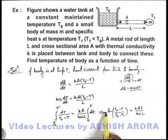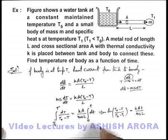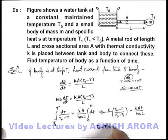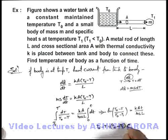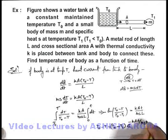Now here this negative sign can be taken on other side and we can take the antilog. This will give us T₀ - T is equal to (T₀ - T₁) multiplied by e to power minus kAt/(msL).